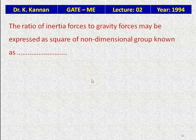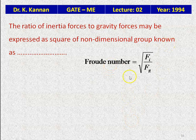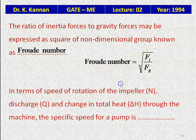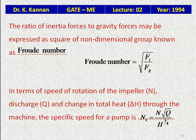The ratio of inertia force to gravity force may be expressed as the square of the non-dimensional Froude number: Fi/Fg = Fr². The specific speed for a pump is given by Ns = N√Q / H^(3/4), in terms of speed of rotation N, discharge Q, and total head H.